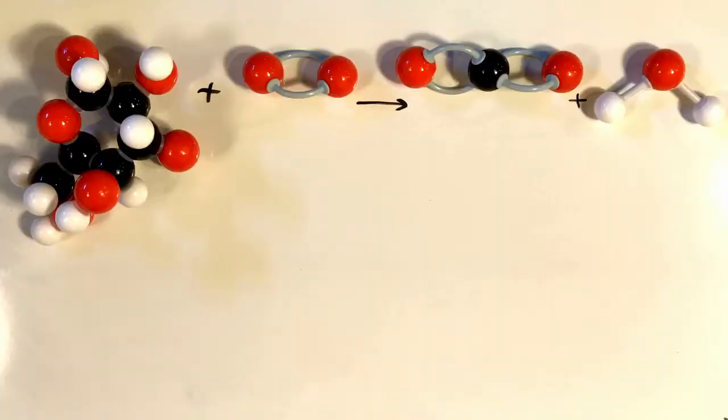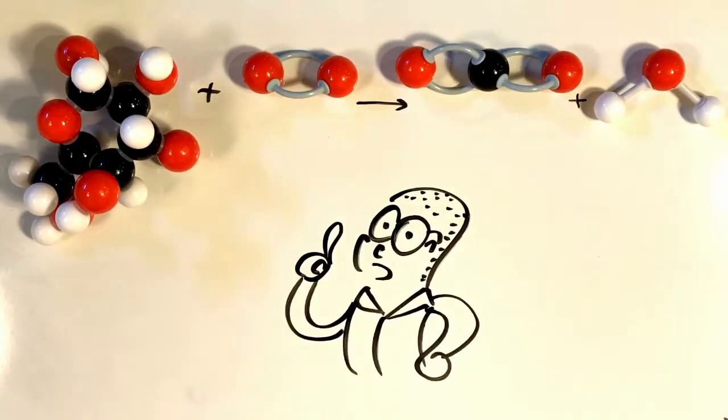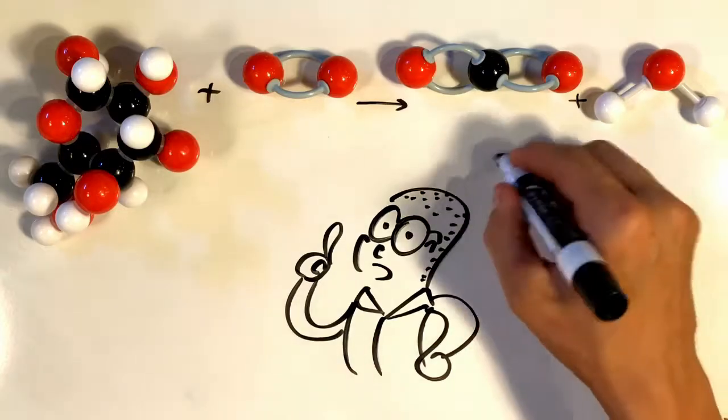Now if you watched our video on balancing the burning ethanol reaction, you might be able to figure out how to fix this. Because matter can't be created or destroyed, we need to see the same number of atoms for each element on the reactants side and on the products side. And that is currently not the case.